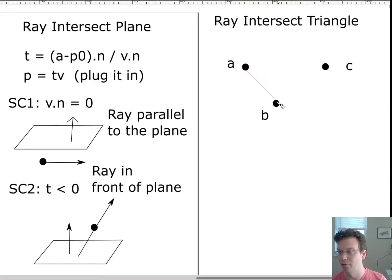If I want to know if a ray intersects a triangle specified by three points, then all I have to do is apply this exact equation.